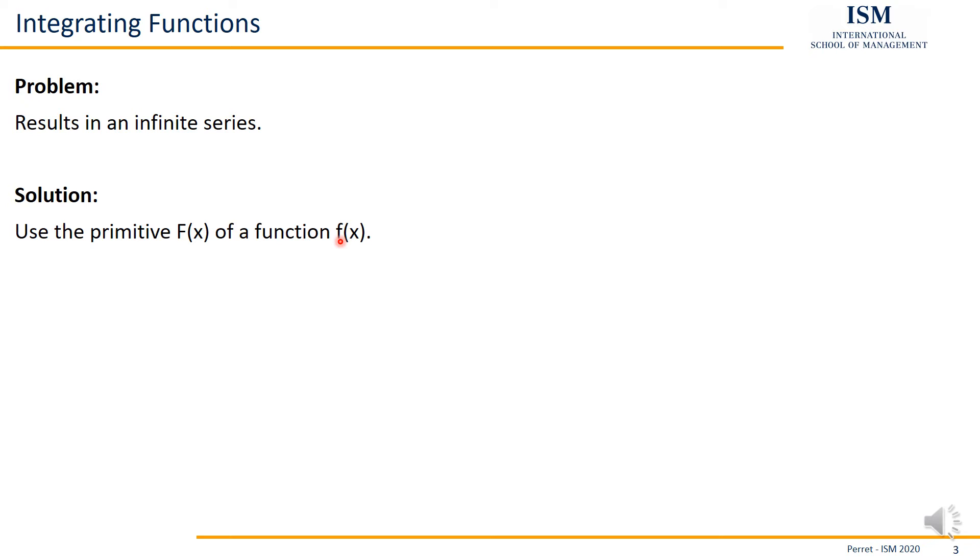We can easily determine these primitives by simply reversing what we know from derivation. So we can imagine these primitives as a function which derivative gives the original function f. That's more or less the mathematical interpretation.